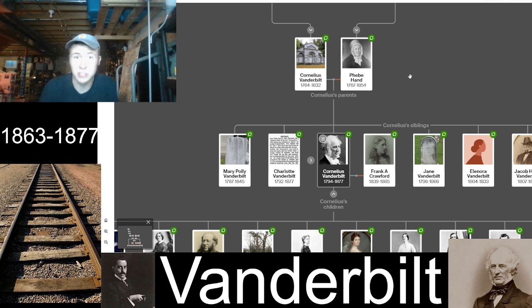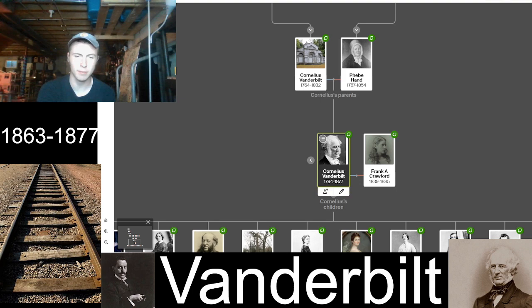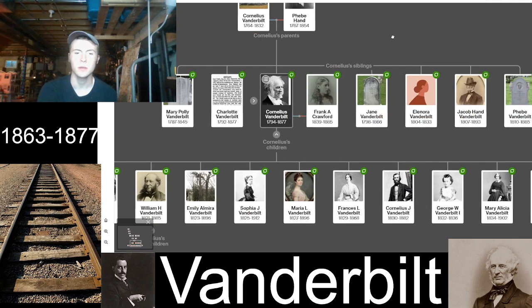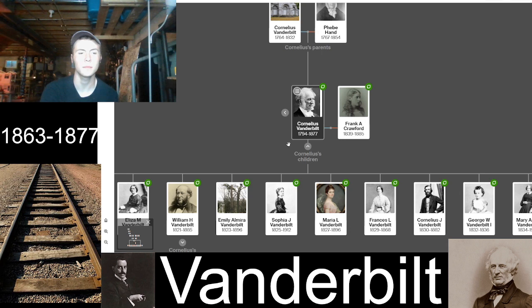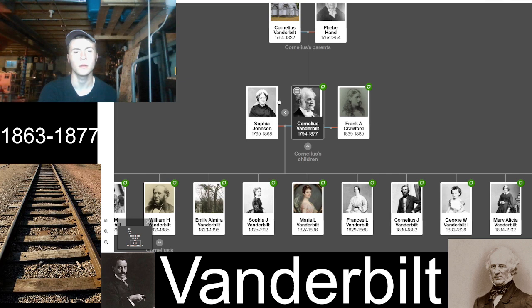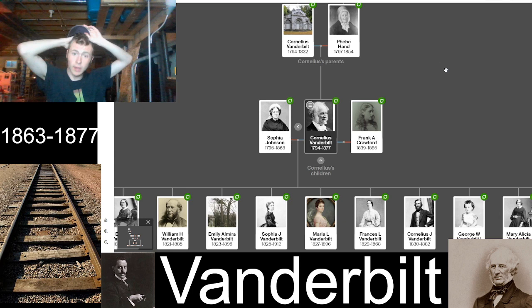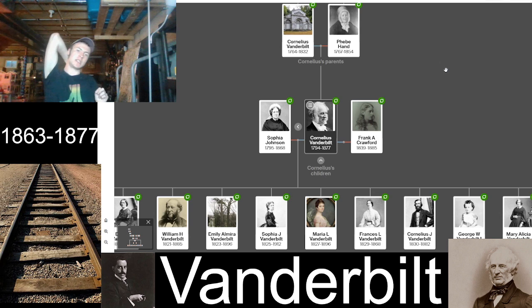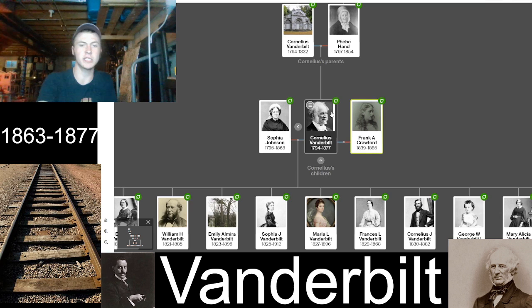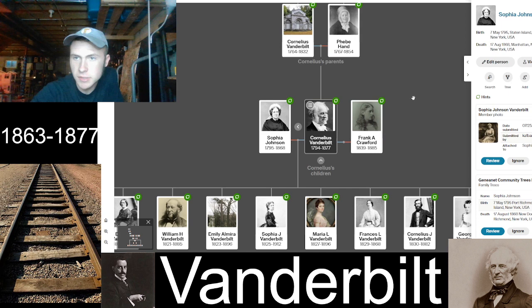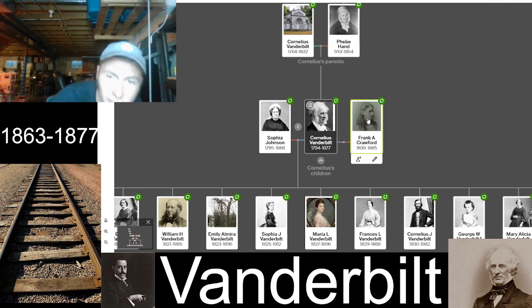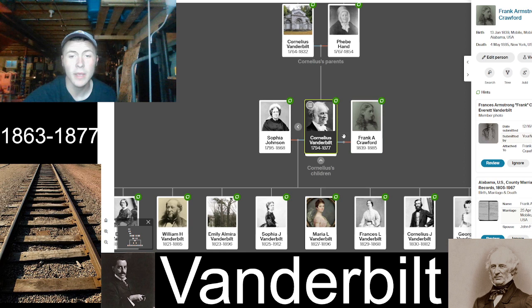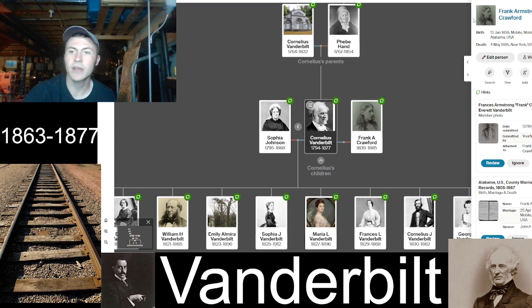Now for the interesting part: Cornelius Vanderbilt had two wives. His first wife was Sophia Johnson — he had all 13 of his children with her: nine daughters and four sons. She was born in 1795 in New York and died in 1868. After her death, he remarried — his second wife was Frank A. Crawford, who was younger than all of his children, born January 1839, died 1885 at around age 46.